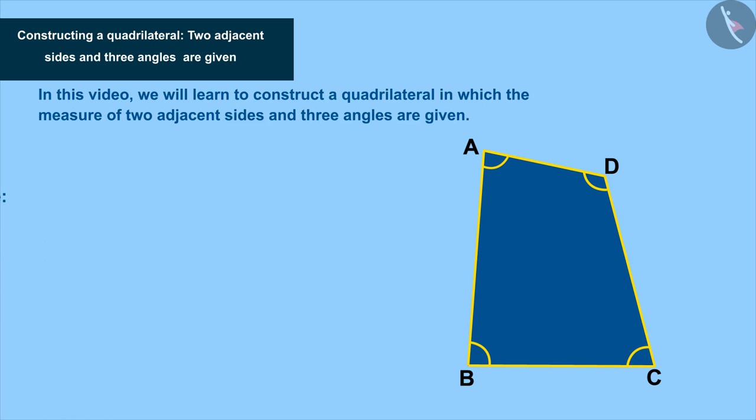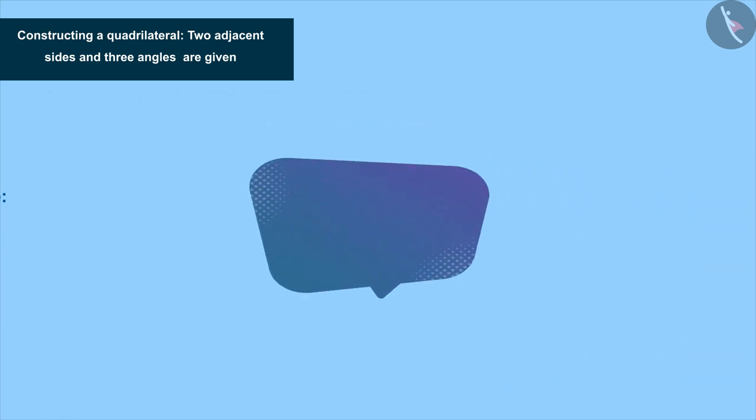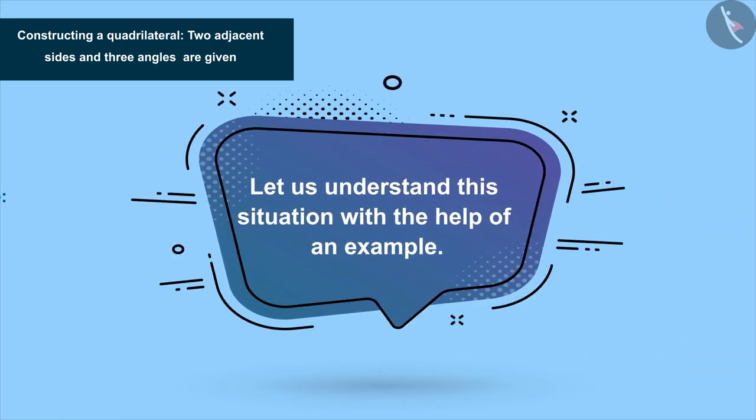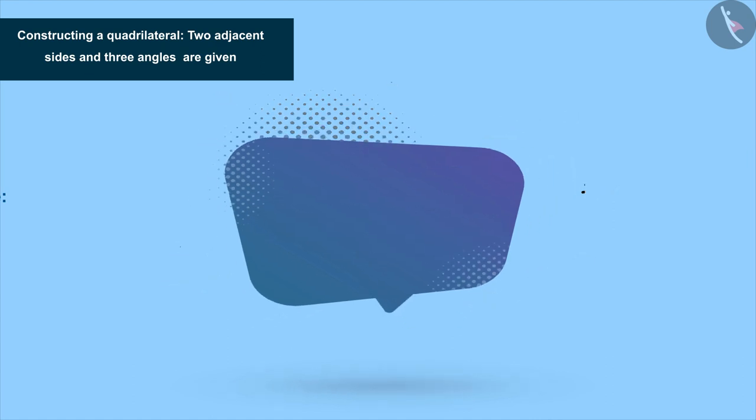Let us understand the situation with the help of an example. Draw a quadrilateral ABCD containing BC equal to 4.5 centimeters, CD equal to 7 centimeters, angle B equal to 70 degrees, angle C equal to 80 degrees, and angle D equal to 110 degrees.